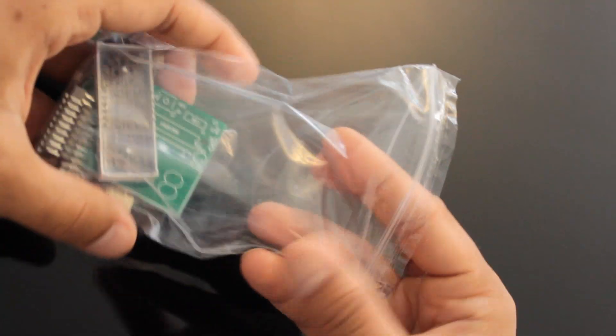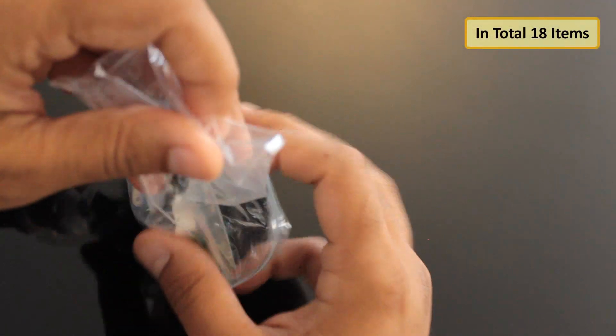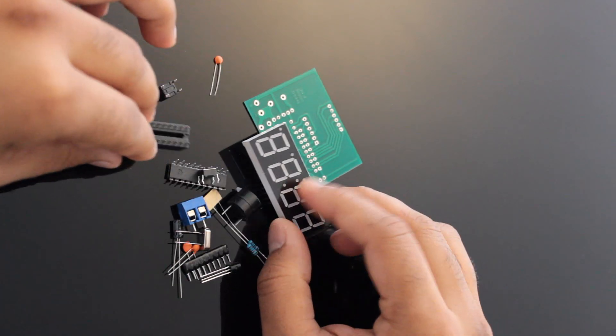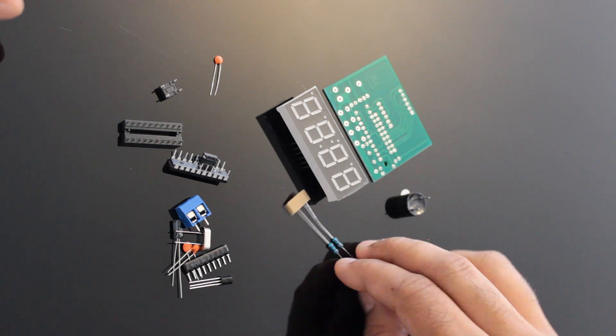The item came with a circuit diagram and a list of components included in the packaging. Including the instruction sheet there are 18 items in this packet. You can find a scanned copy of the circuit diagram in the description below.